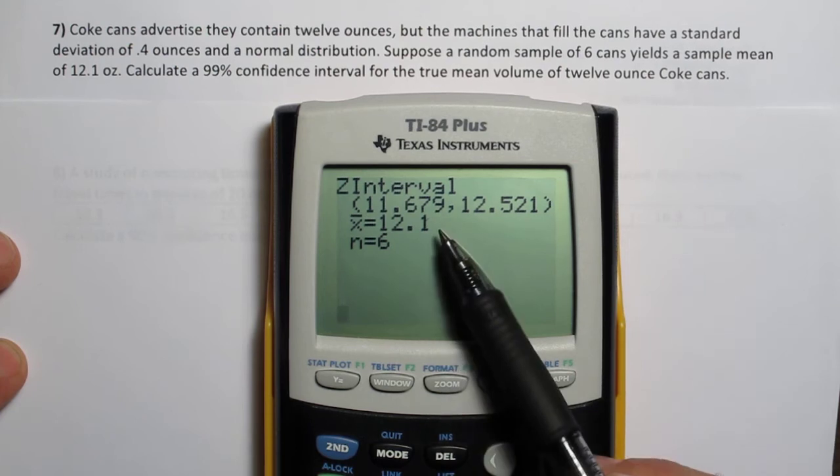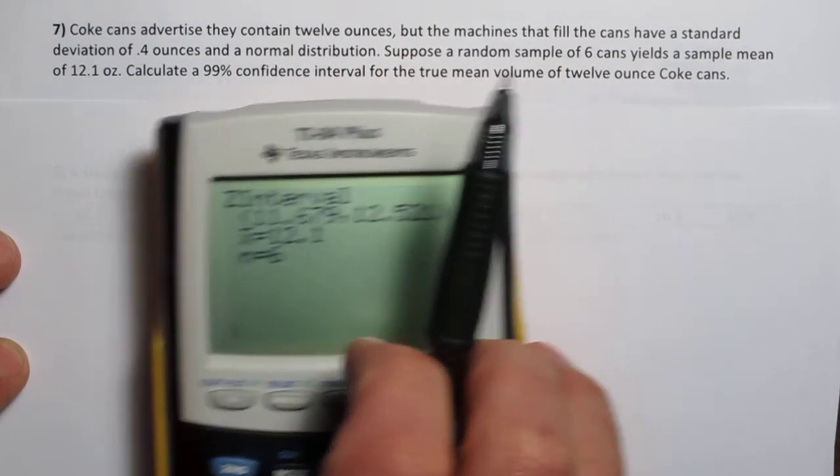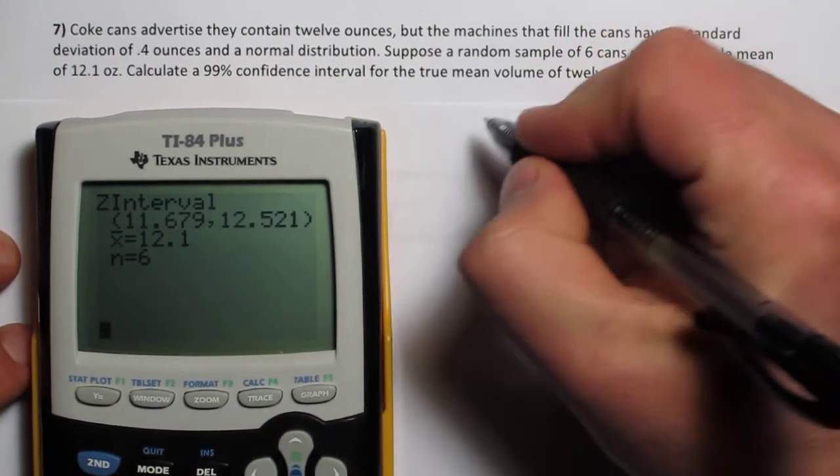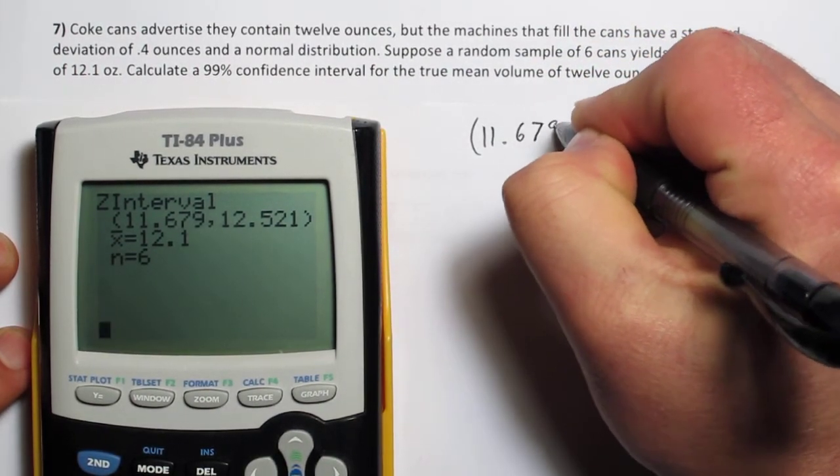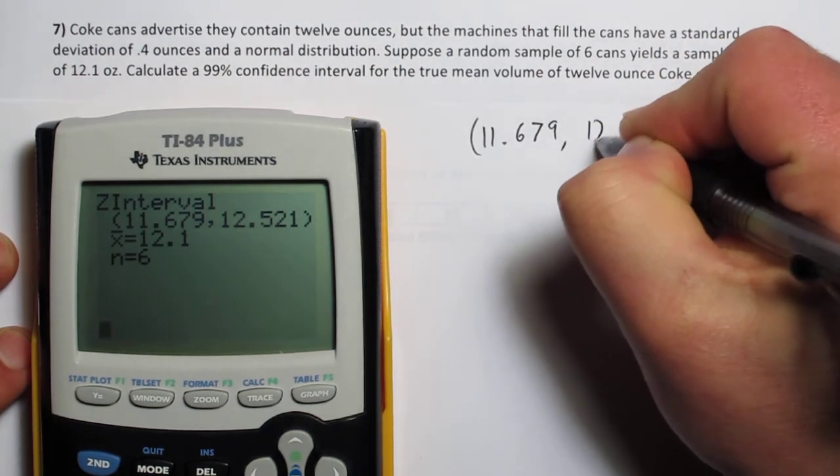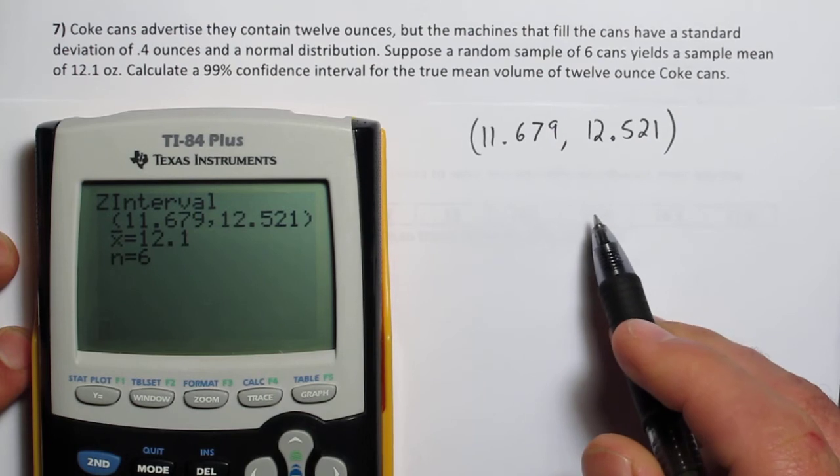When we press calculate, we get 11.679 to 12.521. So we'll write that down as our interval. That completely answers the question.